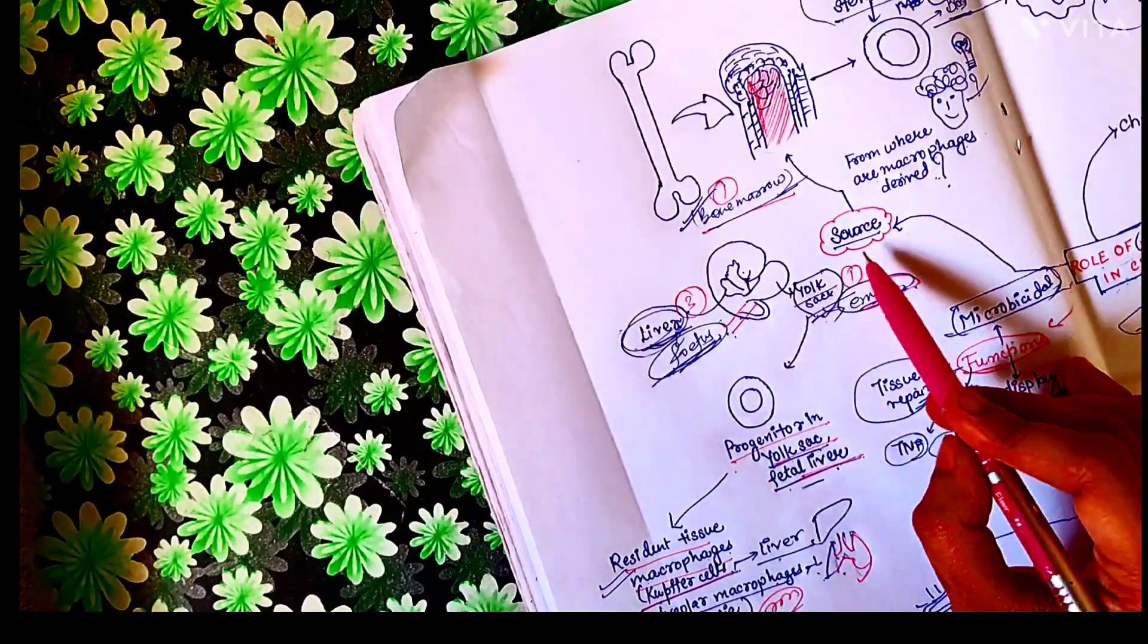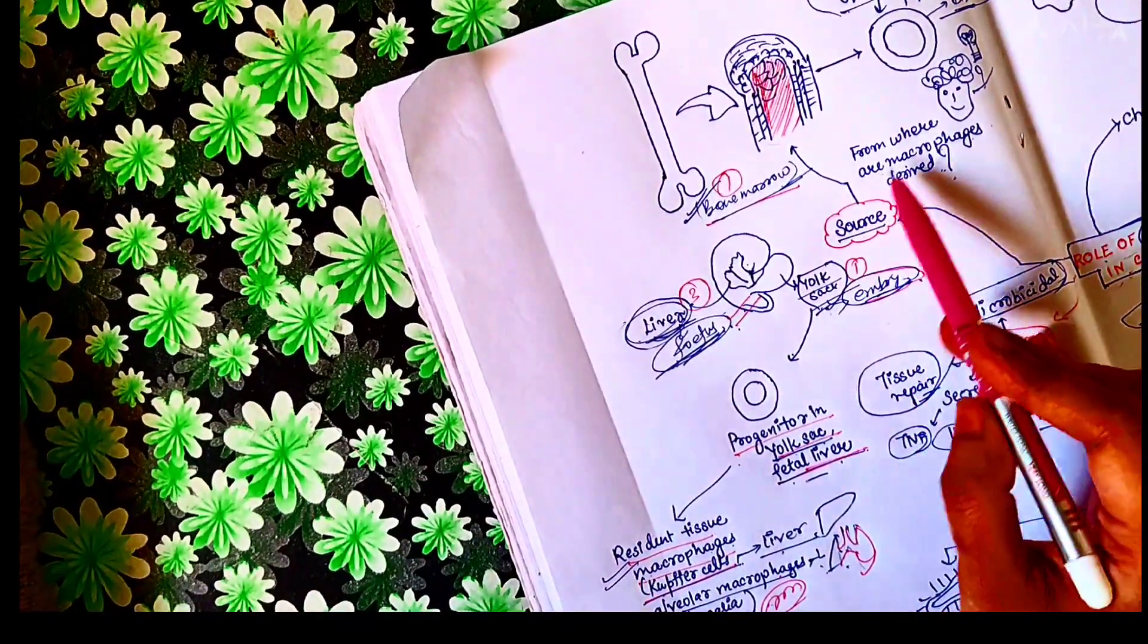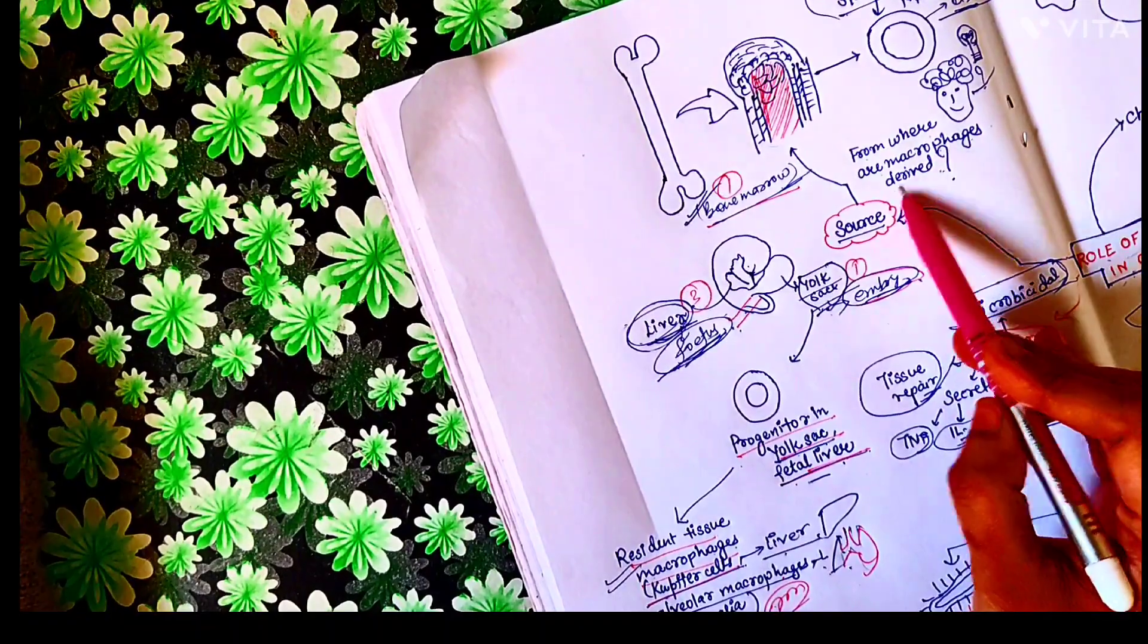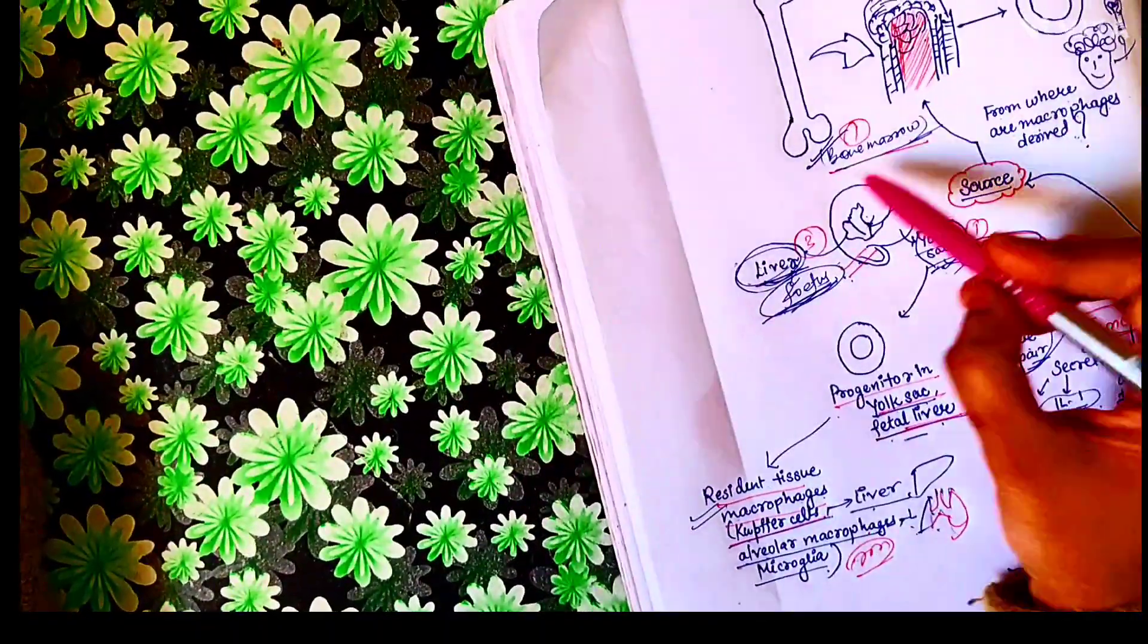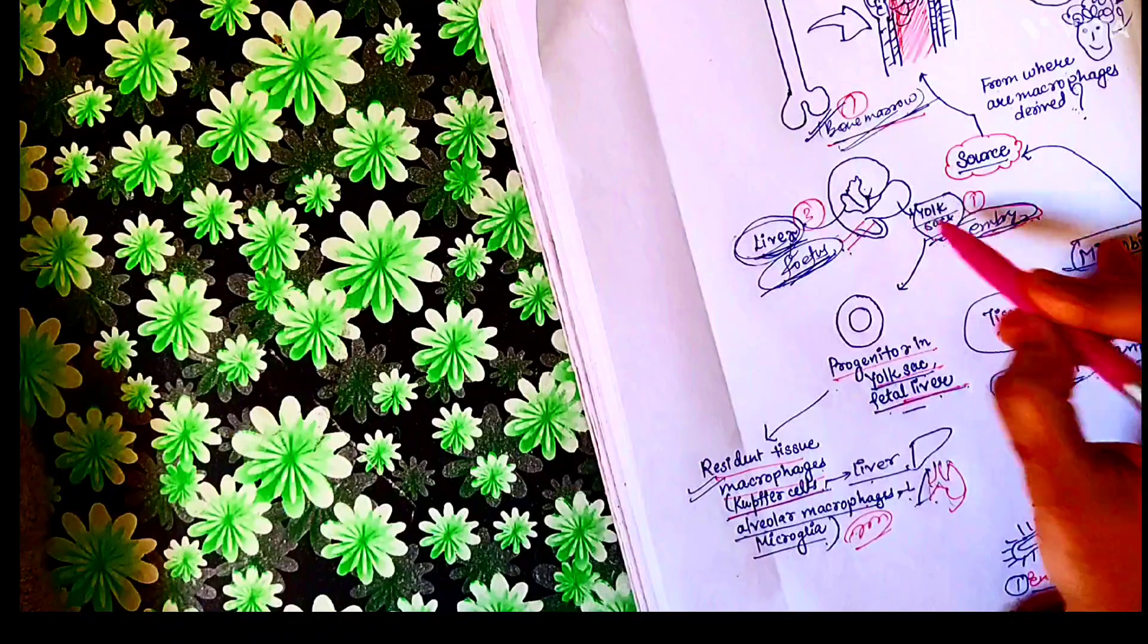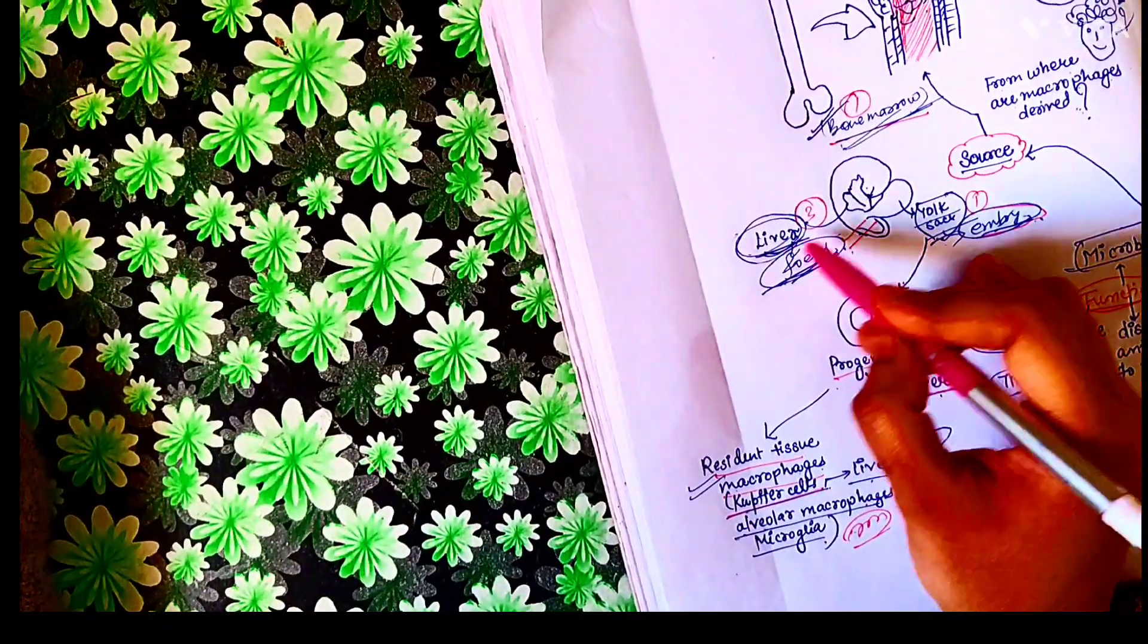Let's begin by studying about the source of macrophages. So from where are macrophages derived? Macrophages are derived from bone marrow or from embryonal yolk sac and liver of fetus.